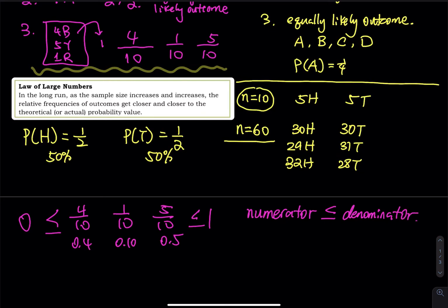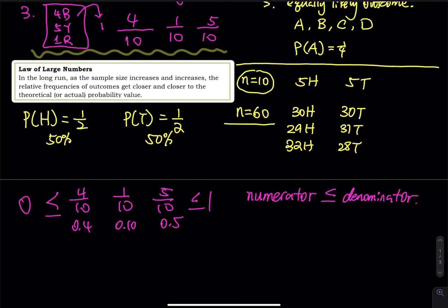Let's write some fractions that can be used as a probability. How about 9 over 10? That is fine — it's between 0 and 1. 10 over 10? Good. 99 divided by 100? Good. 2 over 3? Good. 1 over 1,000? Good. They are all between 0 and 1.